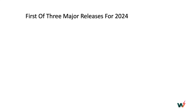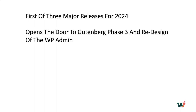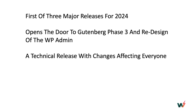This is going to be the first of three major releases for 2024, and major it certainly is. This opens the door to Gutenberg phase three - that's the collaboration phase and the redesign of the WP Admin itself. We really won't see this in full force for about six months. This is a very technical release with changes for everyone.